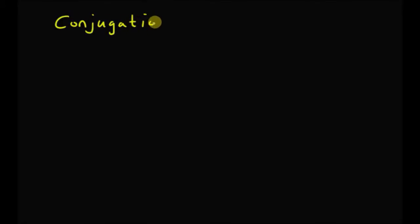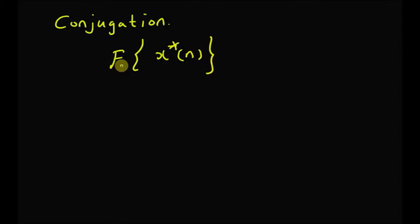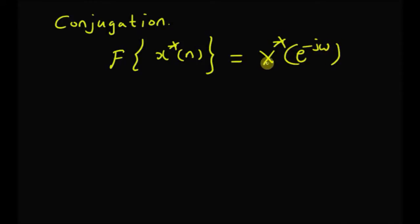Hello, welcome. In this video, let us continue with the properties of DTFT. The first one is the conjugation property. The DTFT of the conjugate of the original signal x(n) — that is, the DTFT of x*(n) — is equal to the conjugate of X(e^{-jω}), where you replace ω with −ω and also apply conjugation on the resulting function. Let us look at the proof for this property.